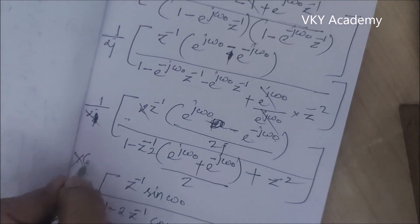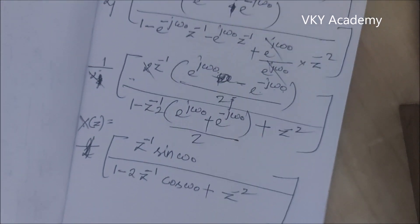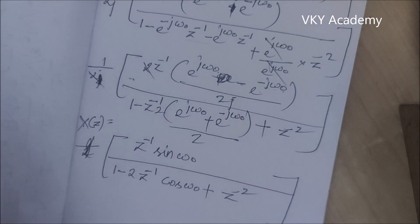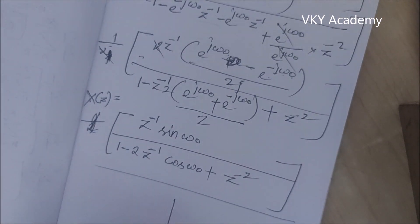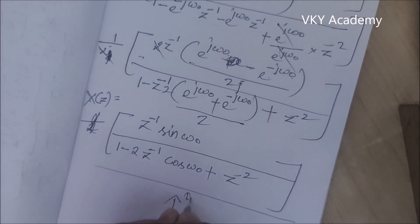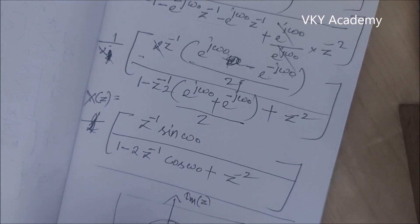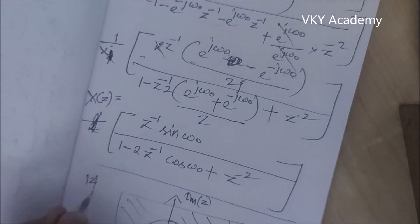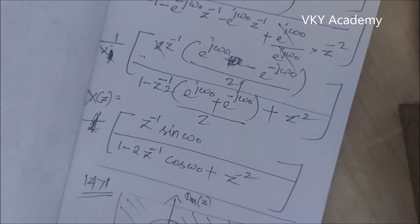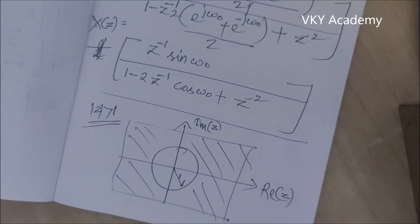So the Z-transform of the sinusoidal discrete-time function x(n) = sin(ω₀n)u(n) is z^(−1)·sin(ω₀) / (1 − 2z^(−1)·cos(ω₀) + z^(−2)). The region of convergence is |z| > 1, since this is a causal sequence.